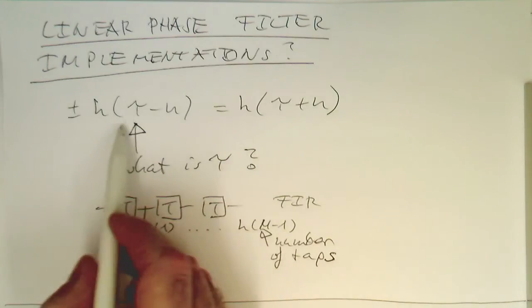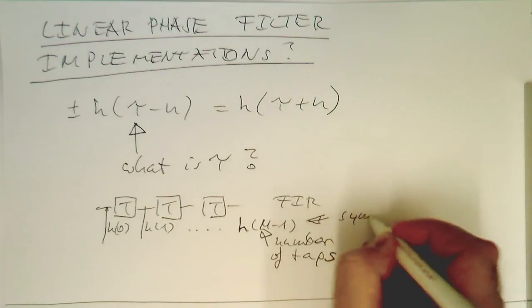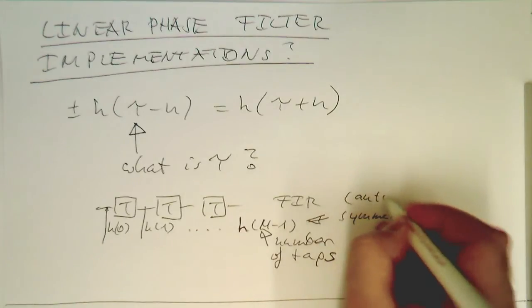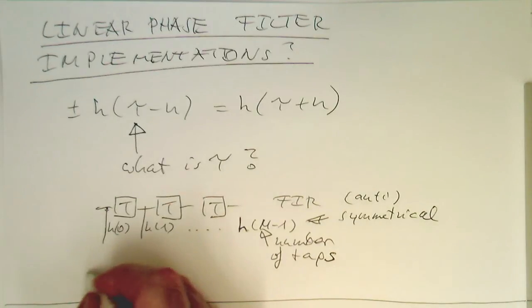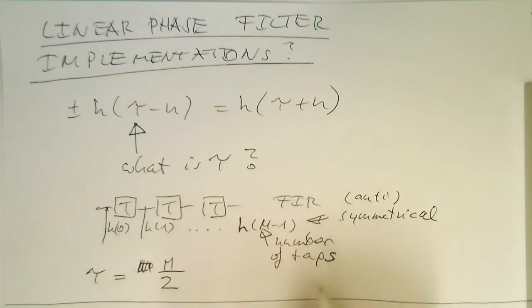Then now we need to create symmetry in the impulse response. So this h of n here needs to be symmetrical or anti-symmetrical. So this means for this m here is that this tau will be usually half of m. So tau is then usually, let's do this again, this is m half. So this means that we have half of the taps and then just mirror the impulse response here.